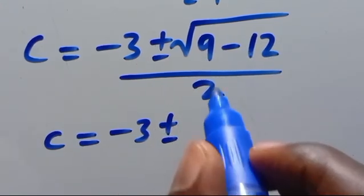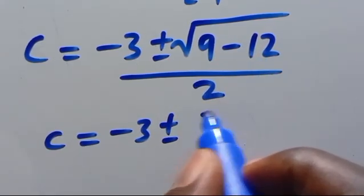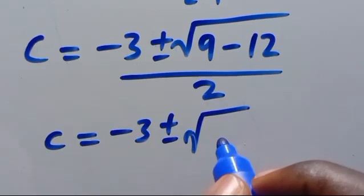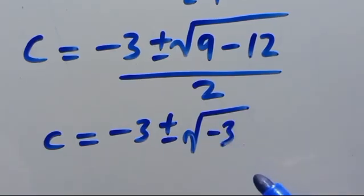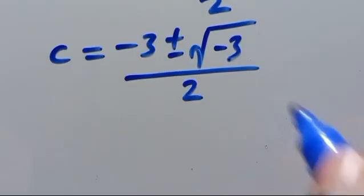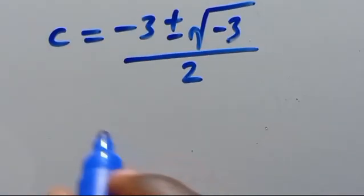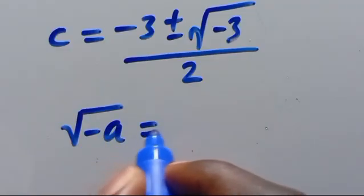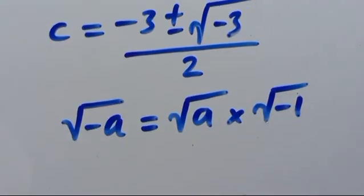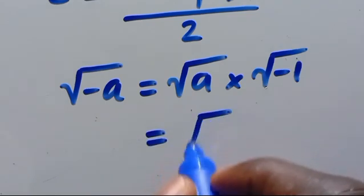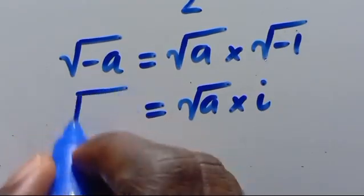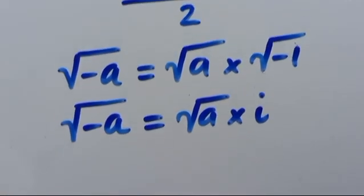We get c equals (−3 ± √(−3)) / 2. Recalling that √(−a) = √a · √(−1), and that √(−1) equals i in the complex space, we apply that here.